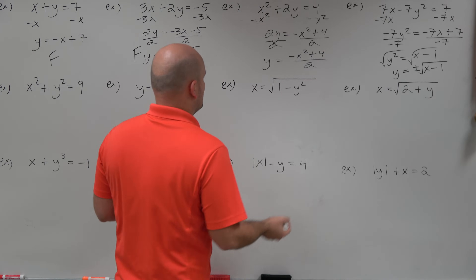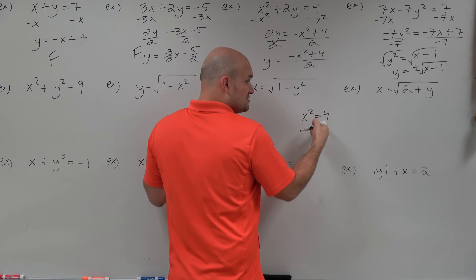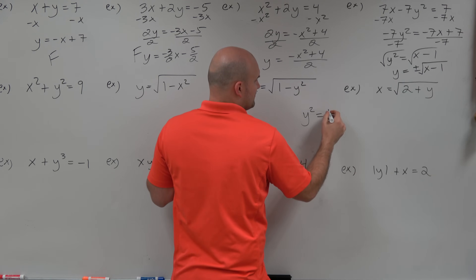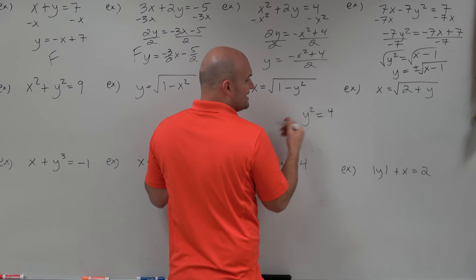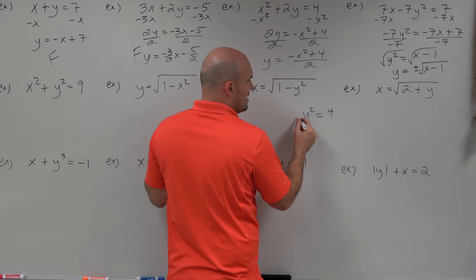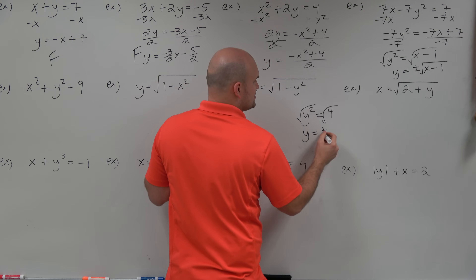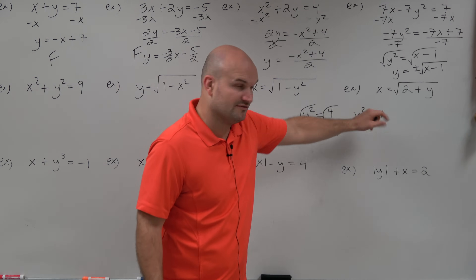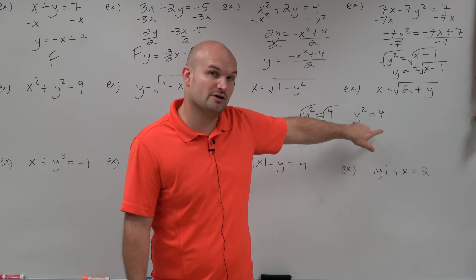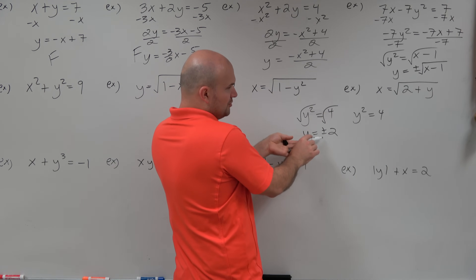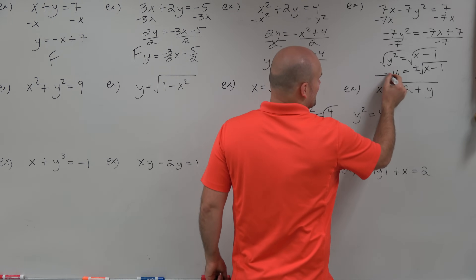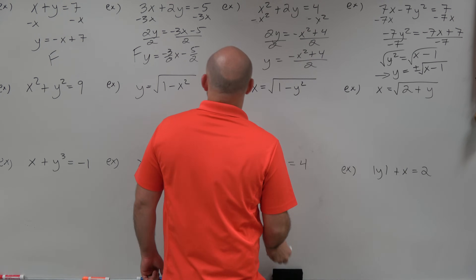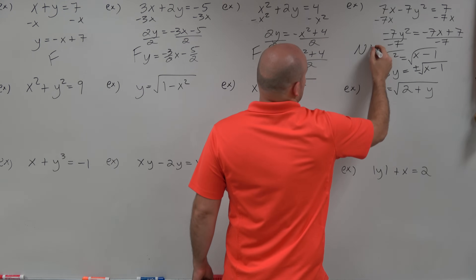To understand why, let's look at y squared equals 4. This has two solutions: y equals plus or minus 2. If you plug in positive 2 for y, you get 4. If you plug in negative 2 for y, you still get 4. So when you introduce the square root, you have to include plus or minus. That means y is not unique — there are now two different answers. Since y is not unique, this is not a function.